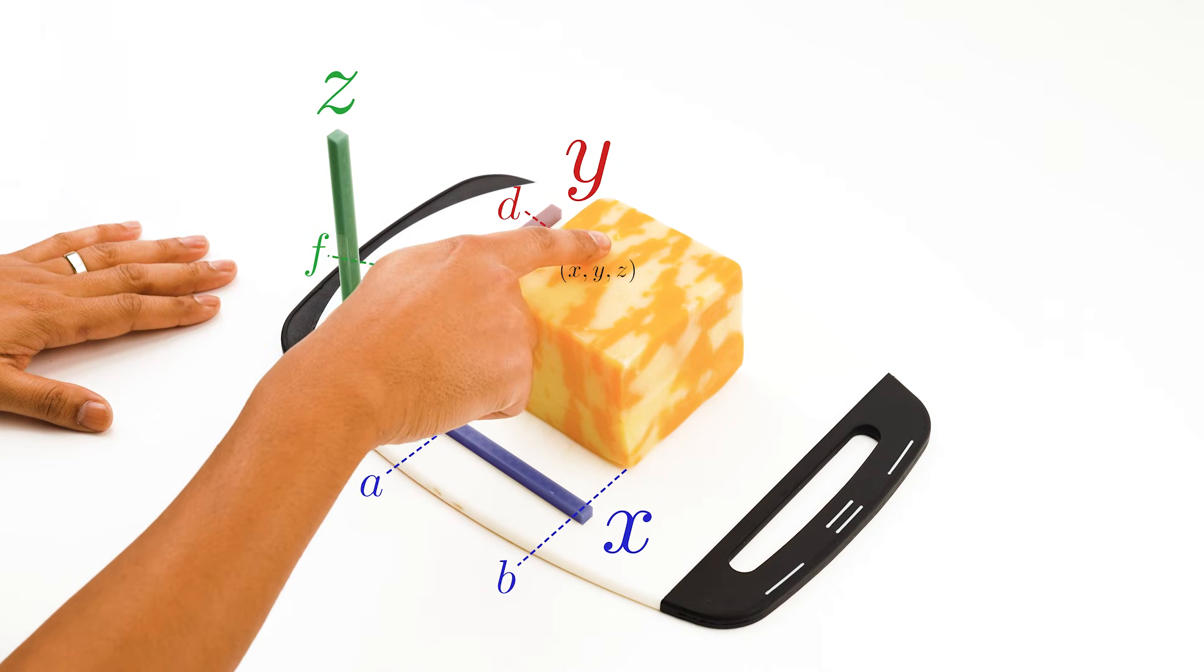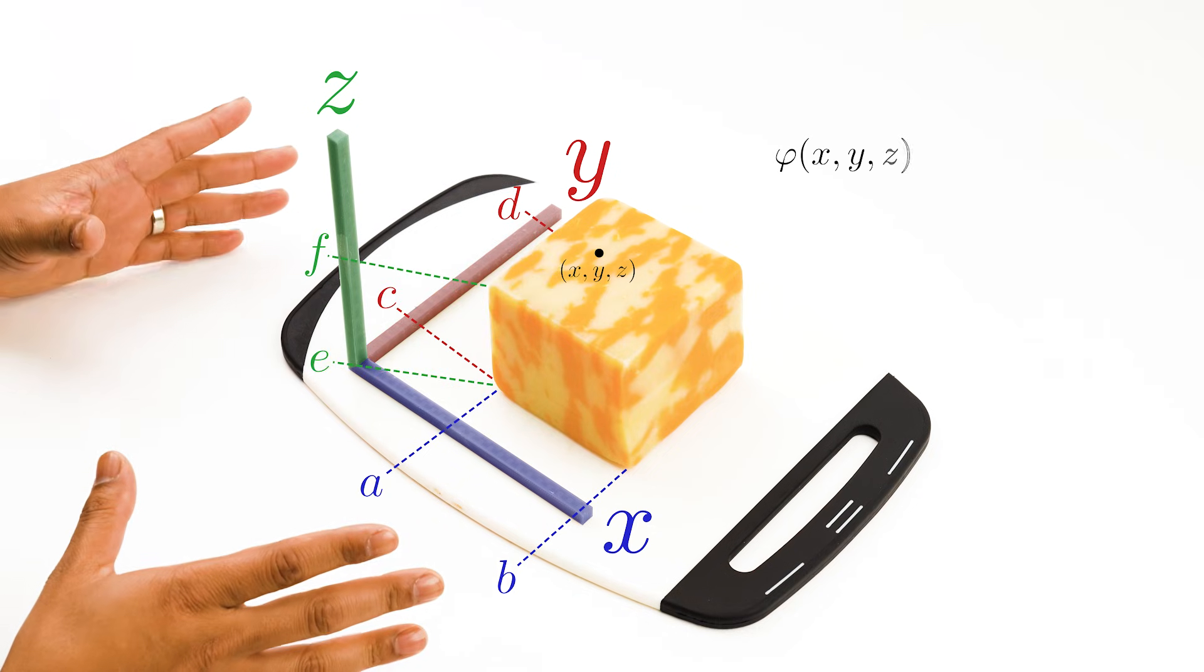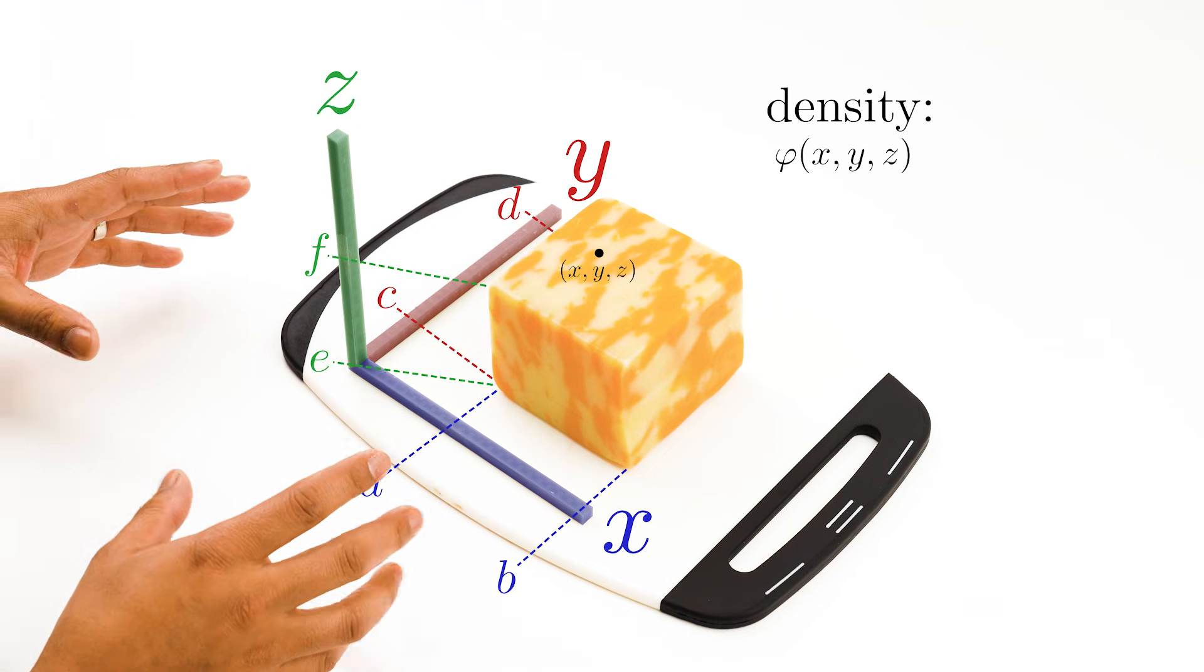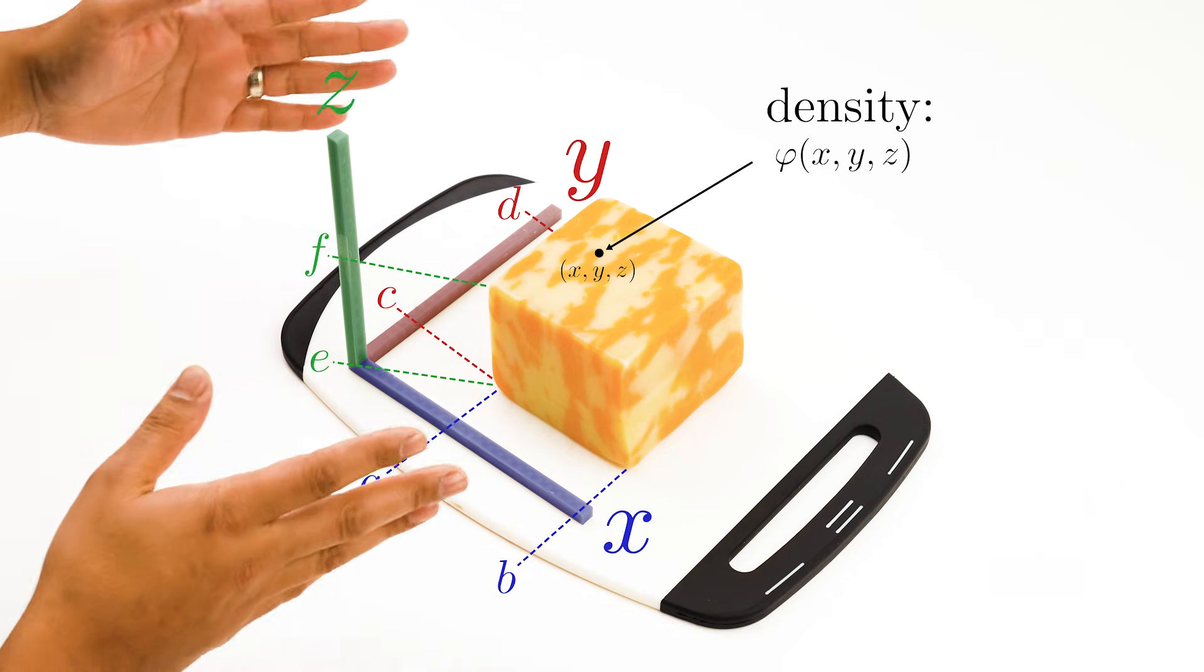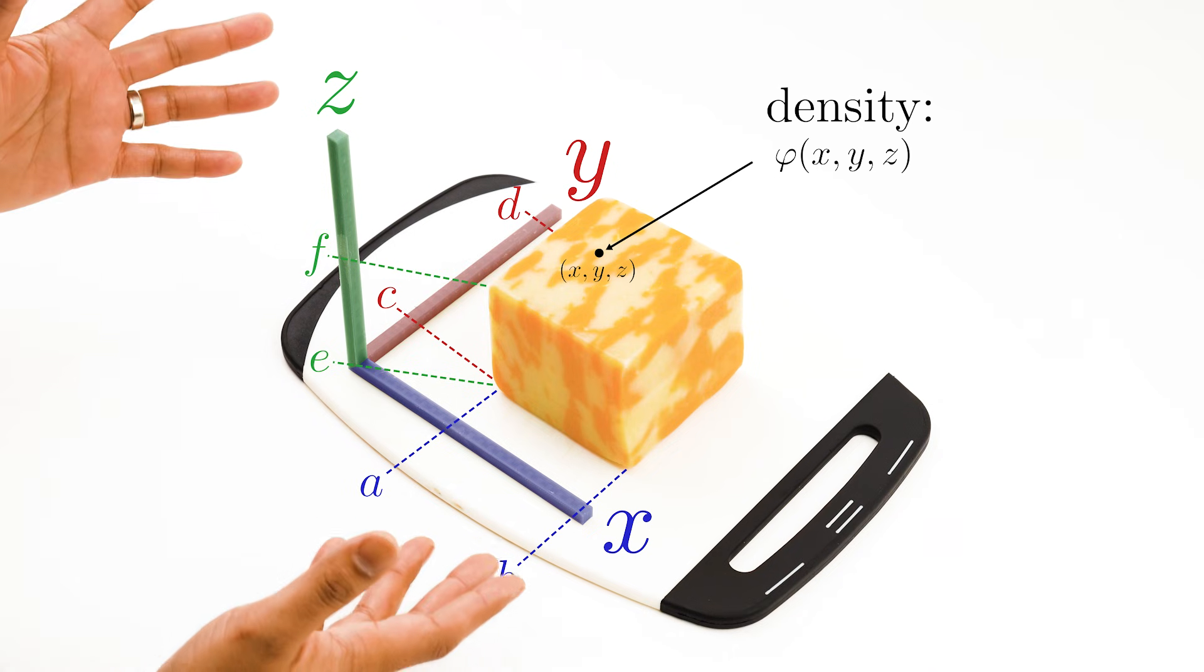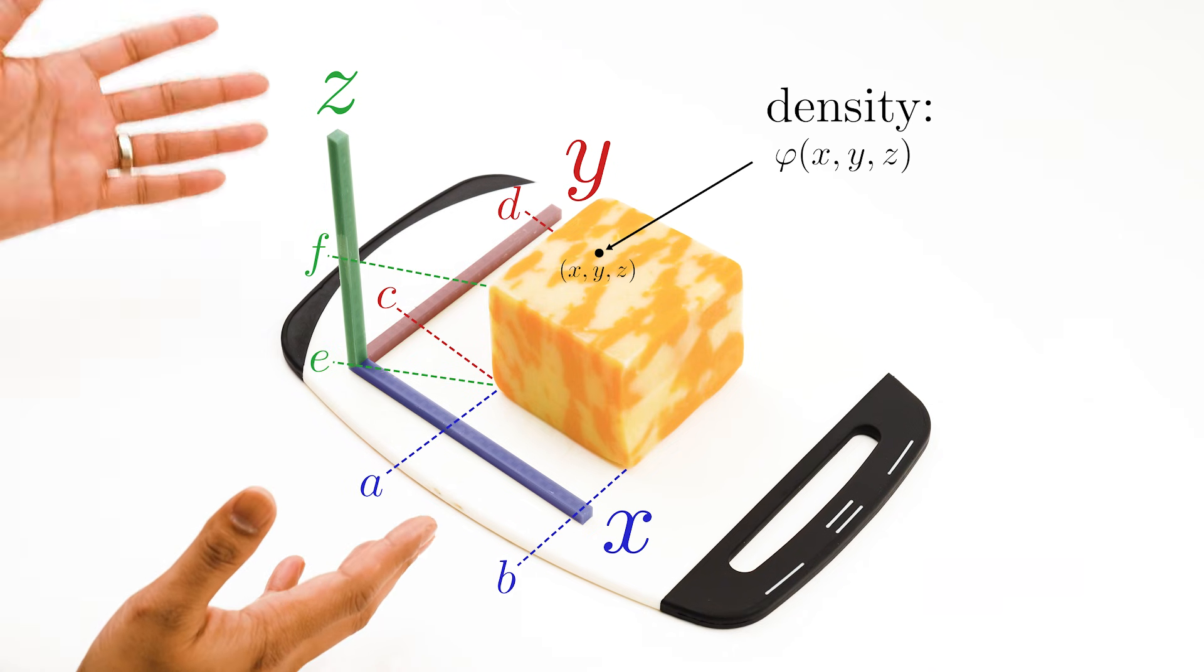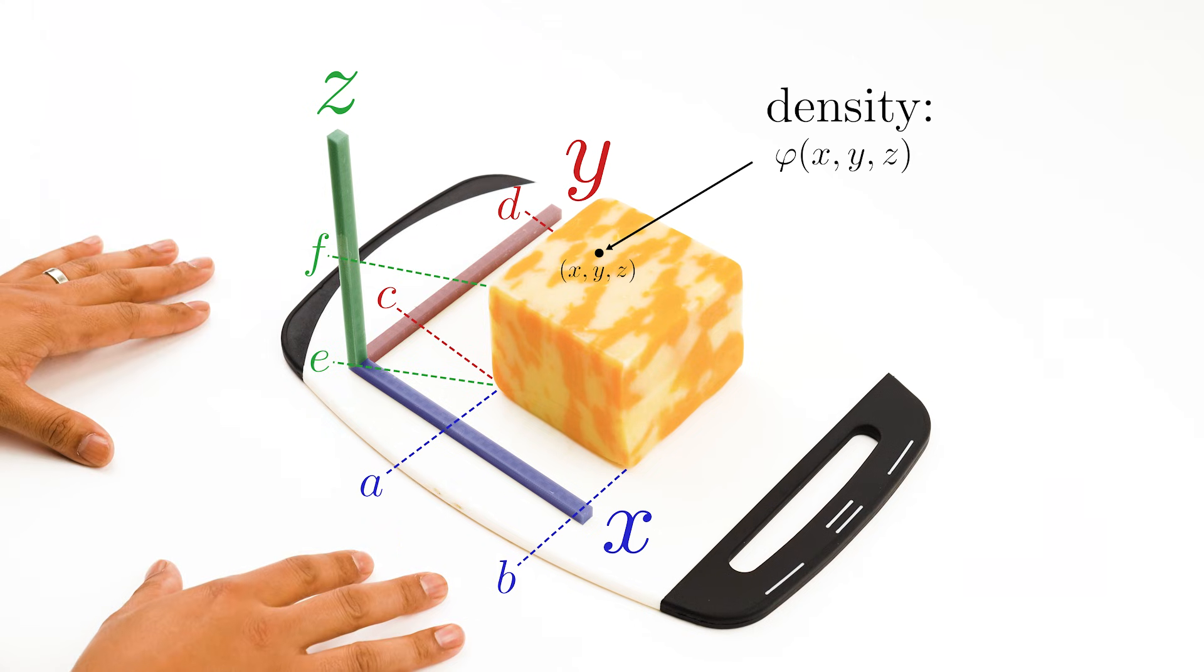For a point x, y, z inside the cheese, interpret the value phi of x, y, z as the density of the cheese at the point. So this varies throughout the space. Mathematically speaking, the function phi may take negative values, but for the sake of the cheese analogy, think of phi as non-negative.